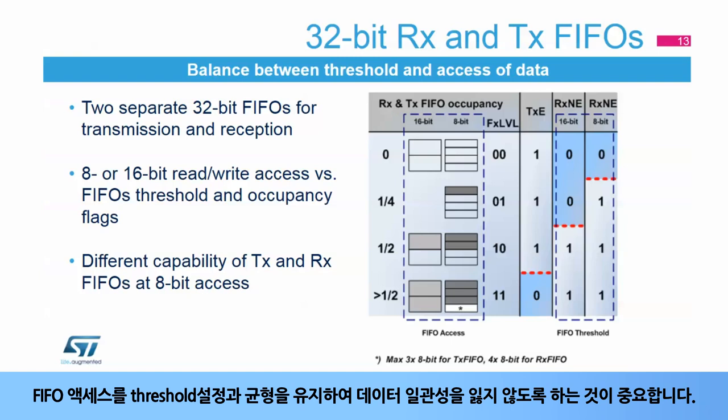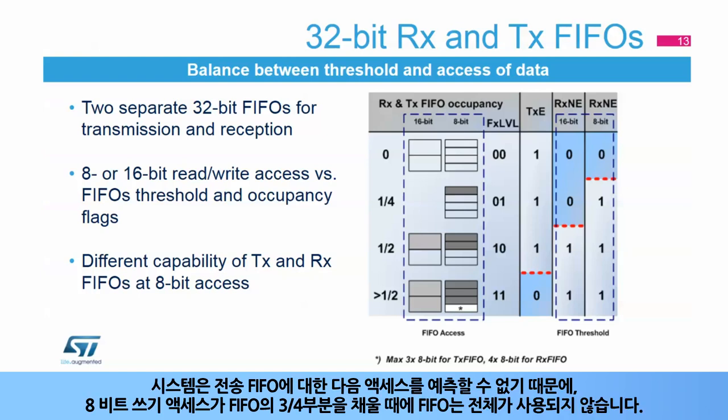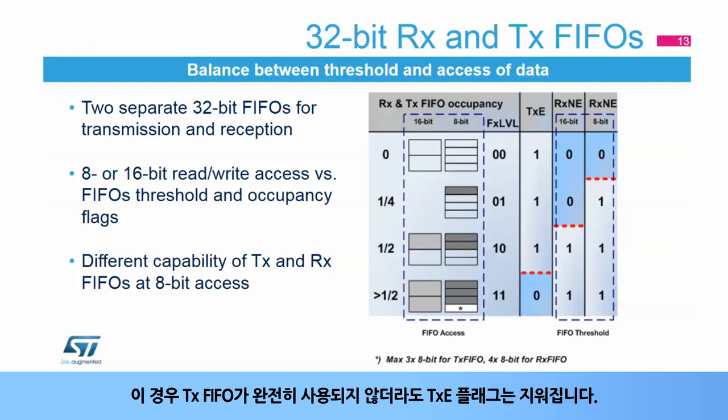It is important to keep the FIFO access balanced with the threshold setting so the data consistency is not lost. During transmission, the FIFO occupancy depends on the data access. The system can never predict the next access to the transmission FIFO, so the FIFO capability is not used when an 8-bit write access is applied to fill the second half of the FIFO. In this case, the TXE flag is cleared as a consequence, even though the TX FIFO is not fully occupied.